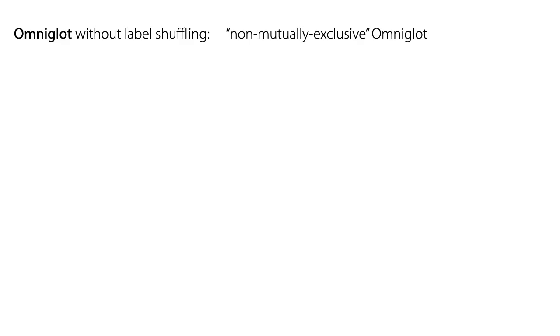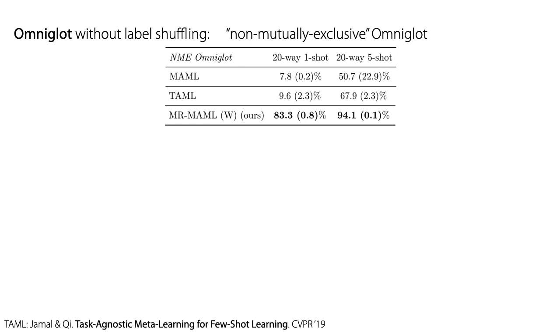On few-shot classification on Omniglot dataset without label shuffling, surprisingly, existing meta-learning methods completely fail to solve this task, reaching a near random performance. In contrast, our method outperforms traditional meta-learning methods by a large margin.